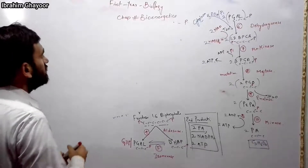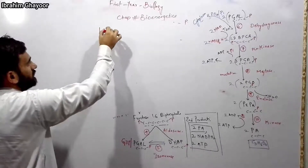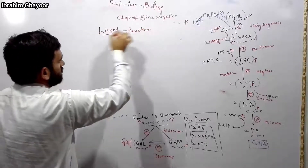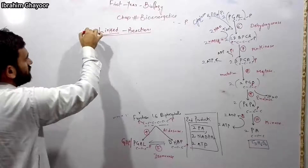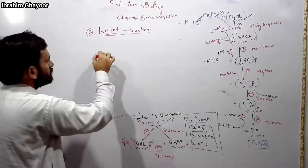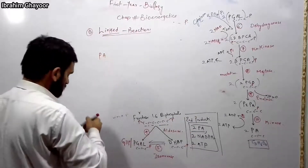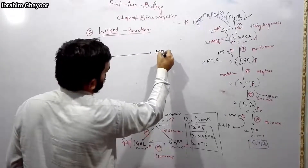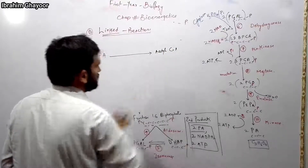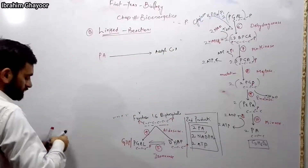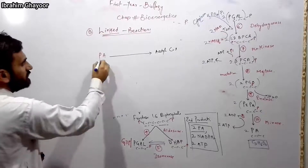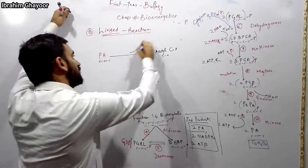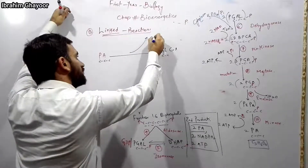The link reaction is important. It occurs in the mitochondrial matrix. Pyruvate — the 3-carbon product of glycolysis — is converted. The link reaction involves pyruvate being processed by the pyruvate dehydrogenase enzyme complex.